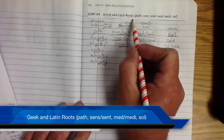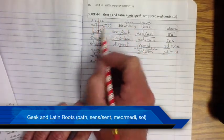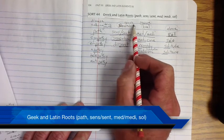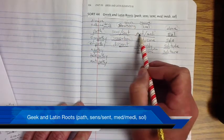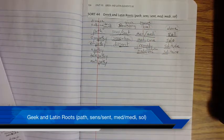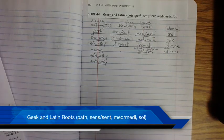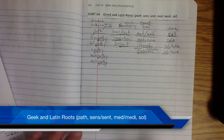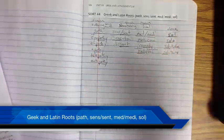We're doing Greek and Latin words. Path, suffering, sense, sensing, feelings, opinions, med, to heal, measure, and soul means alone. You can do this solo, but you can also work with a friend if you need to. Good luck. Get it done. See ya.